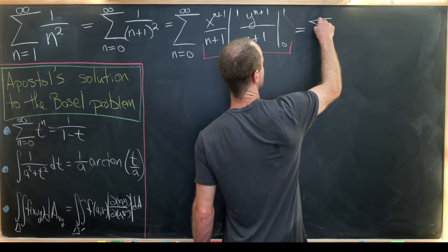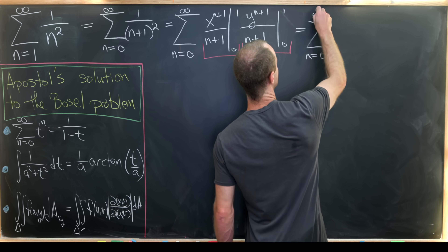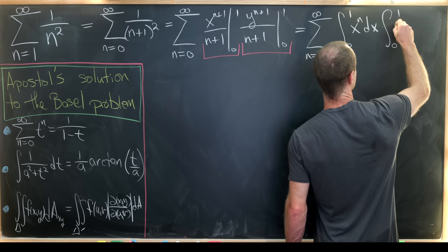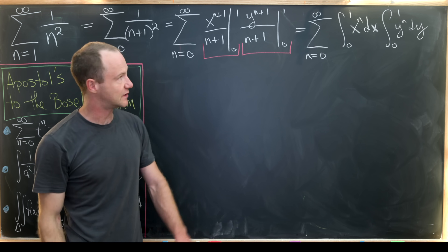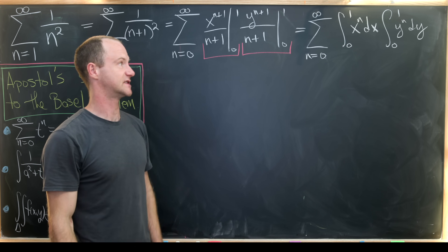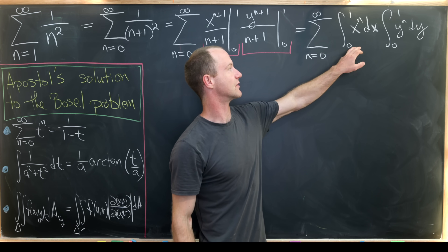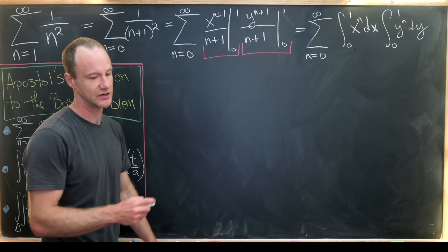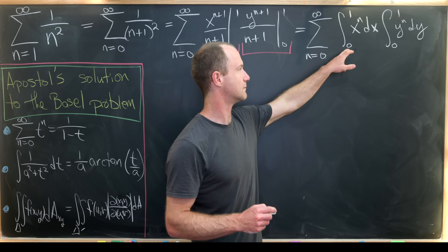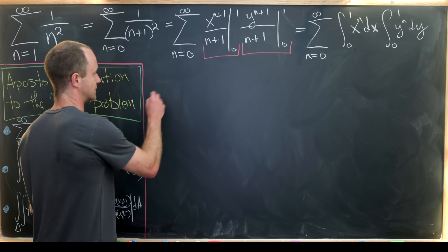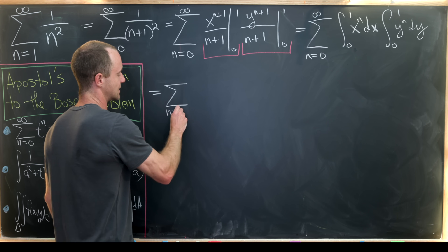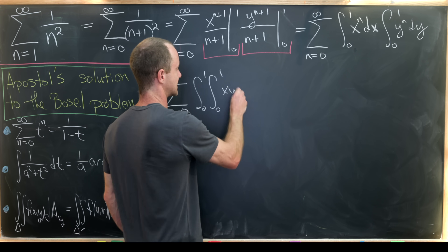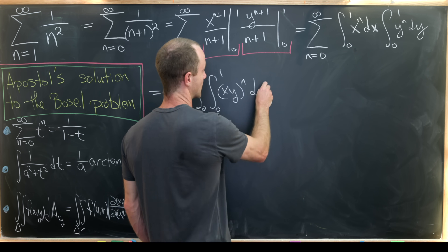This turns into the sum as n goes from 0 to infinity of the integral from 0 to 1 of x to the n dx, times the integral from 0 to 1 of y to the n dy. You can think of this two ways: we took a derivative turning a zeroth integral into a single integral, or we passed an antiderivative from the previous step. Now we take those two single integrals and multiply them into a double integral — we're allowed to do this most importantly because they're over the same interval. That gives us the sum from n=0 to infinity of the double integral over the unit square of (xy) to the n dx dy.